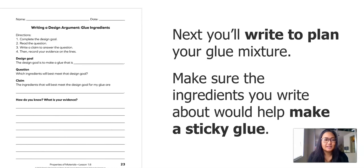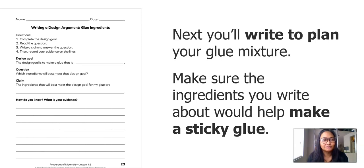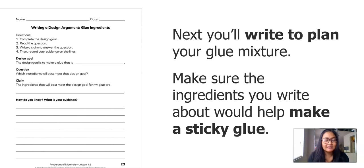Let's read this worksheet: Writing a Design Argument — Glue Ingredients. Number one, complete the design goal. Number two, read the question. Number three, write a claim to answer the question. Number four, record your evidence on the lines. The design goal is to make a glue that is blank. The question is: which ingredients will best meet that design goal? For the claim: the ingredients that will best meet the design goal for my glue are... And finally, how do you know? What is your evidence?